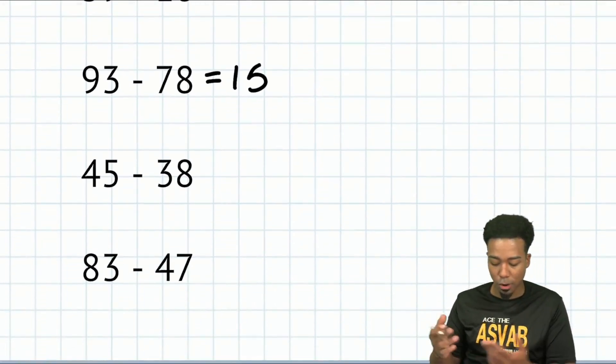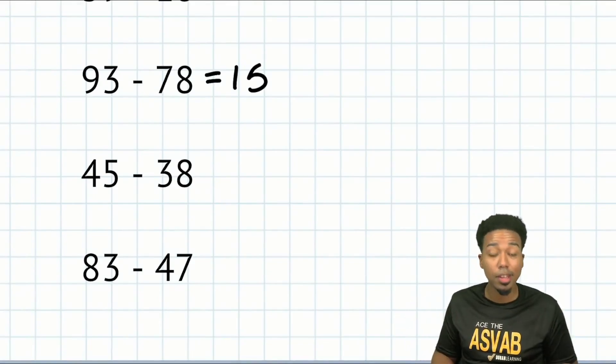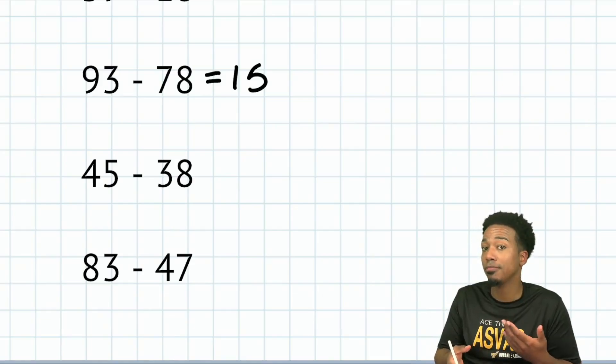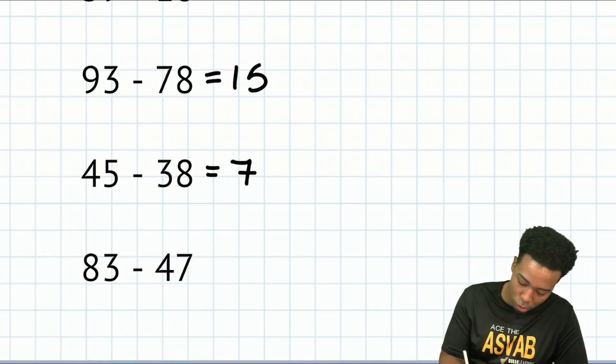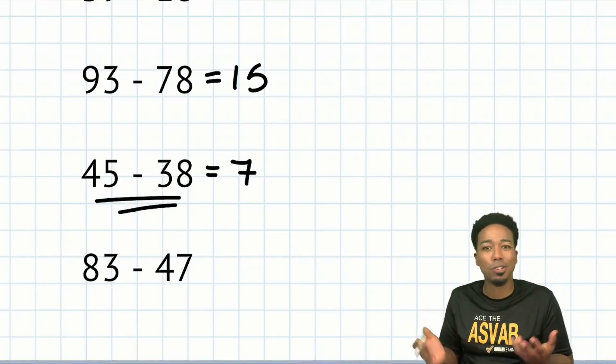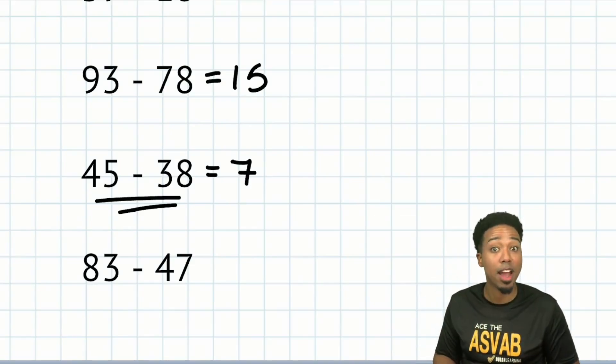Next up, 45 minus 38. Look, we can just take away the 30, then take away the eight. So 45 minus 30 is 15. Take away the eight, that's going to be seven. And again, these numbers are so close together that you don't even need to use mental math. You can just notice there's seven numbers away if you had enough practice.